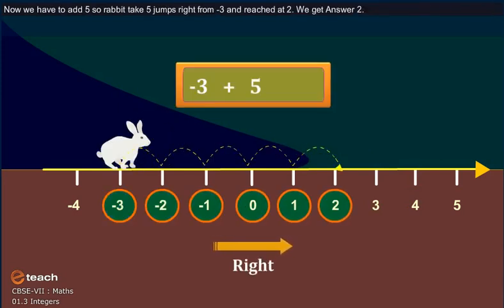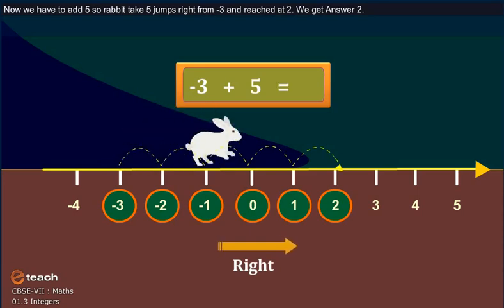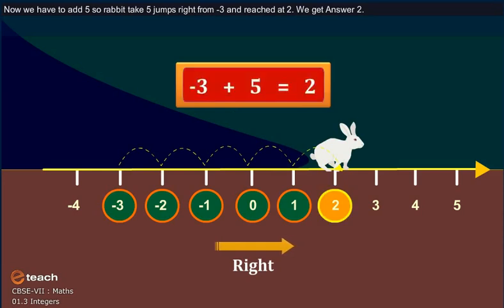Now, we have to add 5. So, rabbit takes 5 jumps right from minus 3 and reached at 2. We get answer 2.